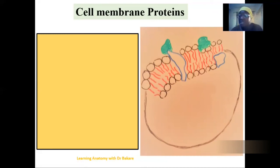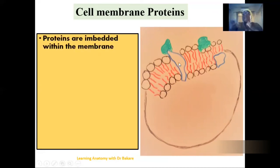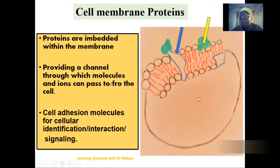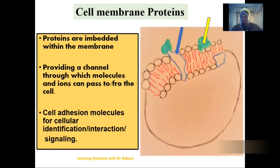Let's look at cell membrane proteins. Along the cell membrane, there are proteins embedded within it that enhance movement across the cell membrane. Apart from enhancing movement of molecules, they are also involved in cellular adhesion processes. It is through these proteins that another cell is able to form contact with this cell, signaling cell identification and interaction with the neighboring cell.